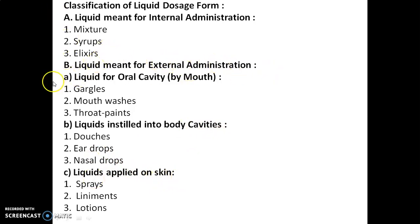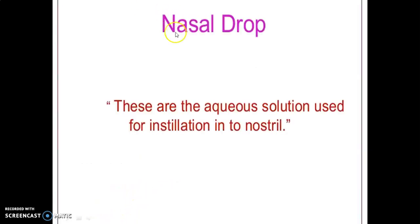Liquids for the oral cavity are of three types: gargles, mouthwashes, and throat paints. Liquids instilled into body cavities are again of three types: douches, ear drops, and nasal drops. Liquids applied on the skin are again of three types: sprays, liniments, and lotions.